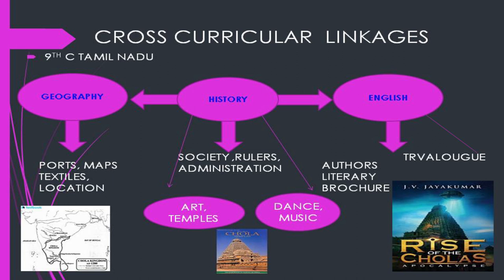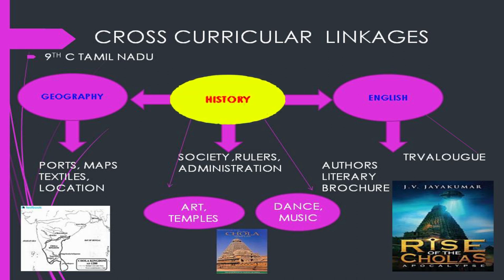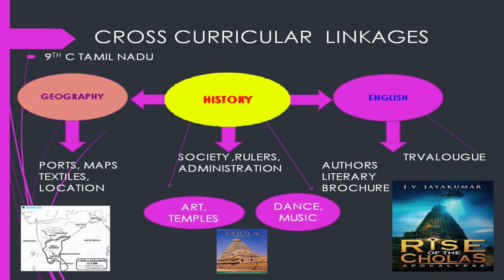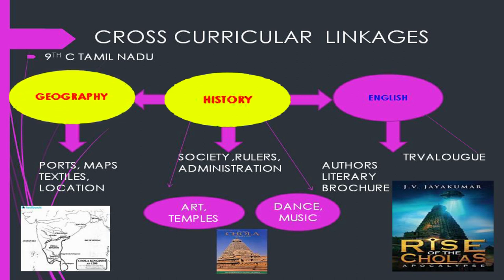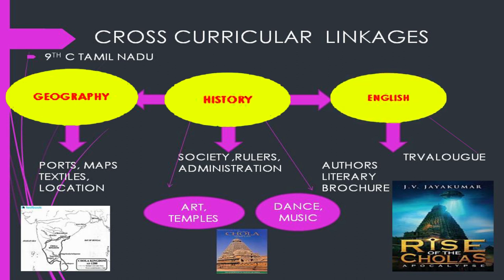Take the example of Tamil Nadu, as shown on this board. Tamil Nadu in the ninth century — the historical aspects taught in history class include its political situation, the rulers, economic prosperity, and the challenges that made the Cholas one of the greatest dynasties. The Chola Empire's location, climatic conditions, and soil — whether it supported vegetation or not — helps us understand the geographical aspects.